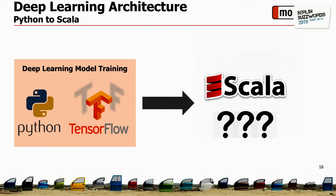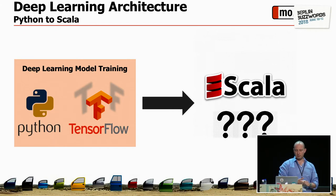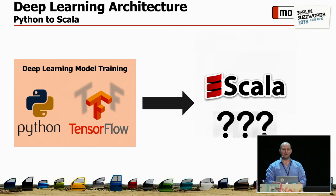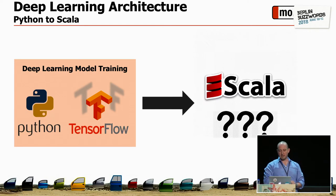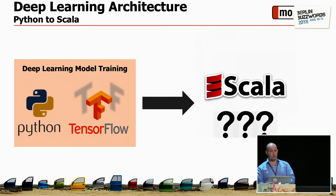Our first challenge was that data scientists prefer Python, and they used TensorFlow to train the deep learning models in Python. But our production system is Java or Scala only — not because we have anything against Python, but most of our developer and DevOps experience is around Java, and we didn't want surprises in production. So we had to think about how to take the Python implementation and run it in Scala without rewriting the code from scratch — that was a really important requirement.